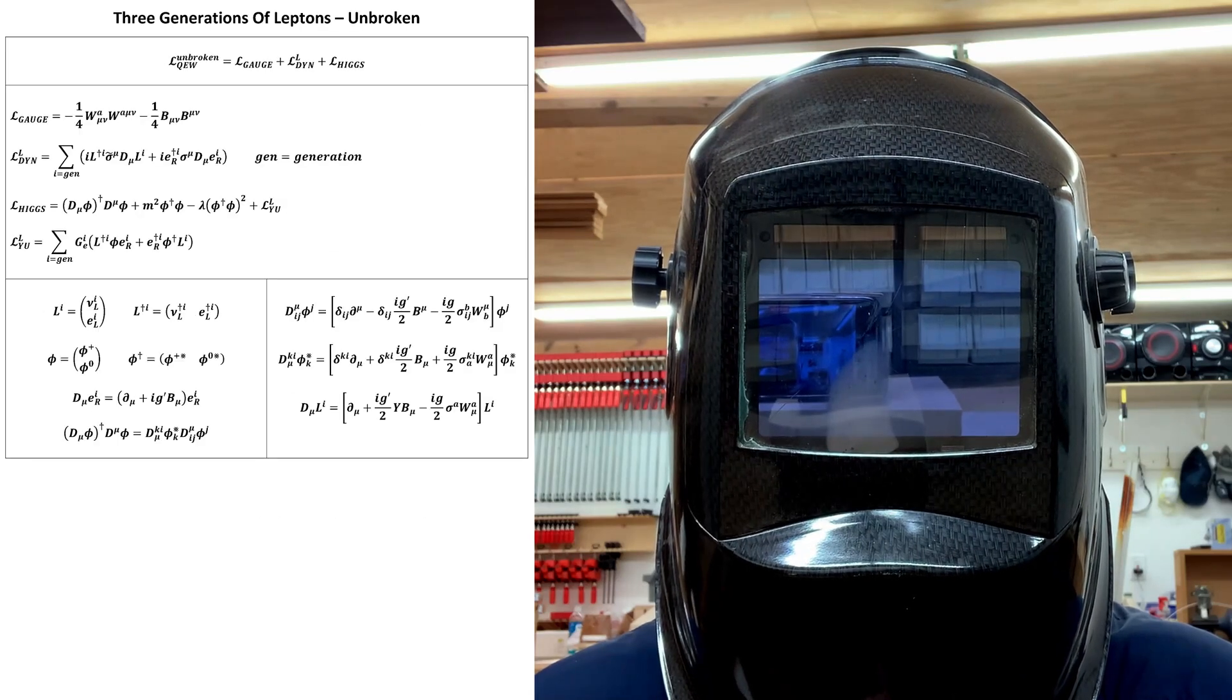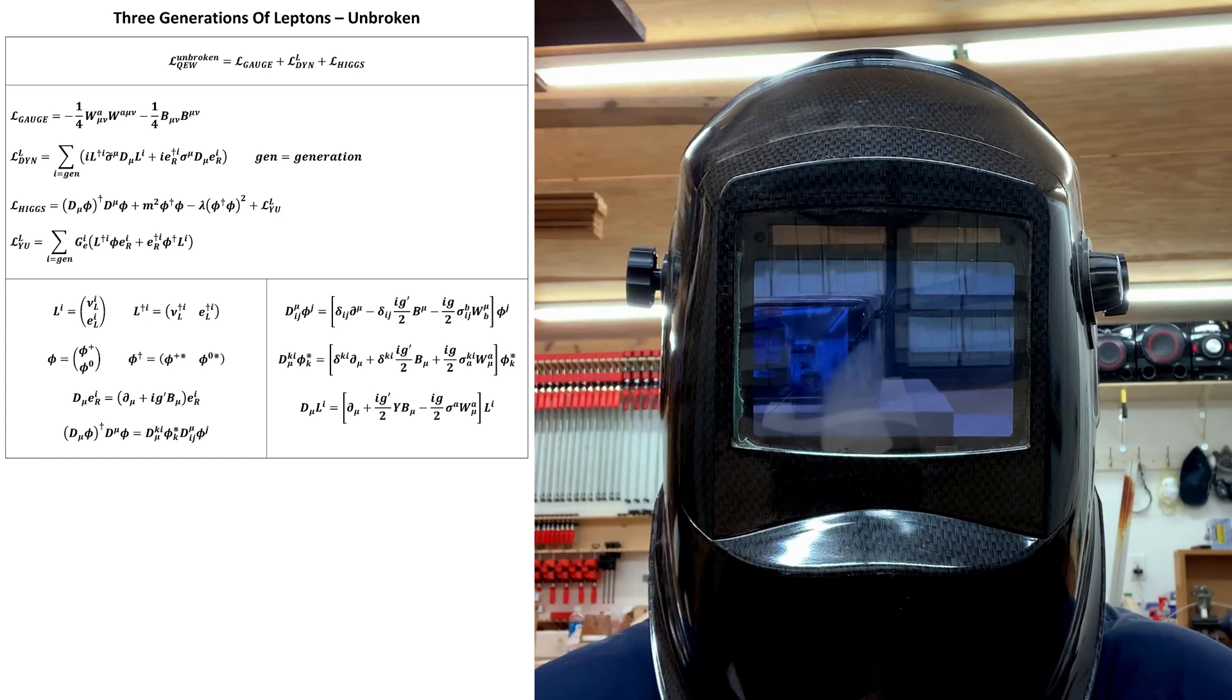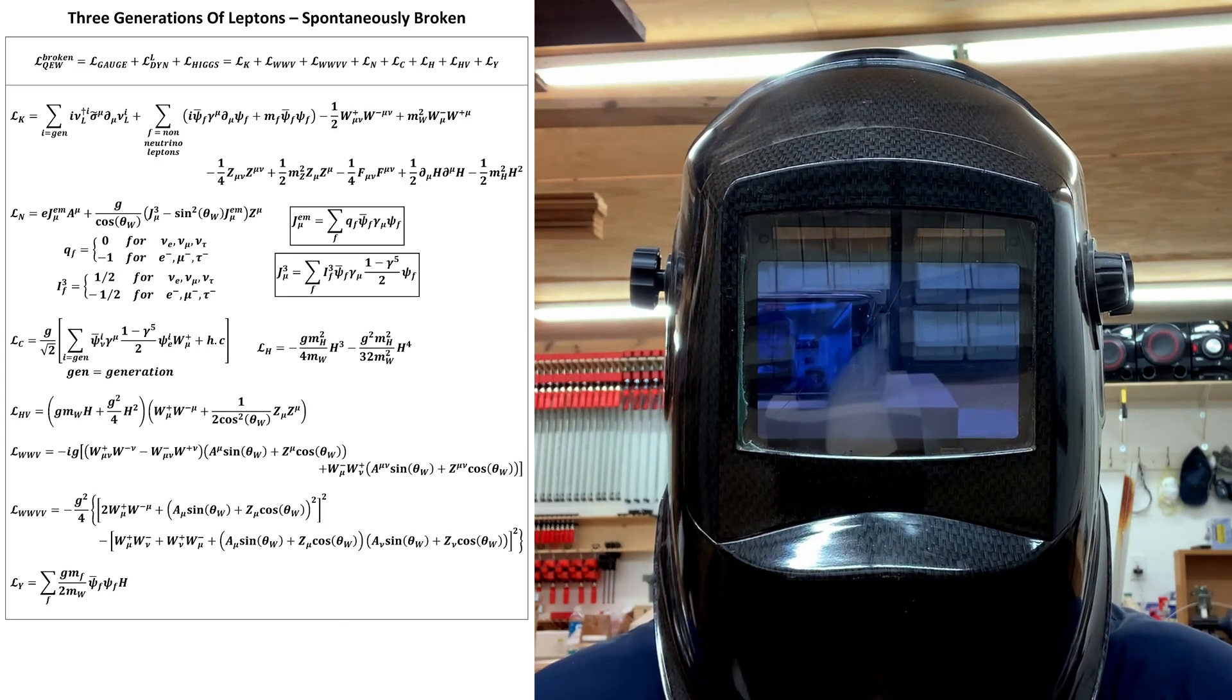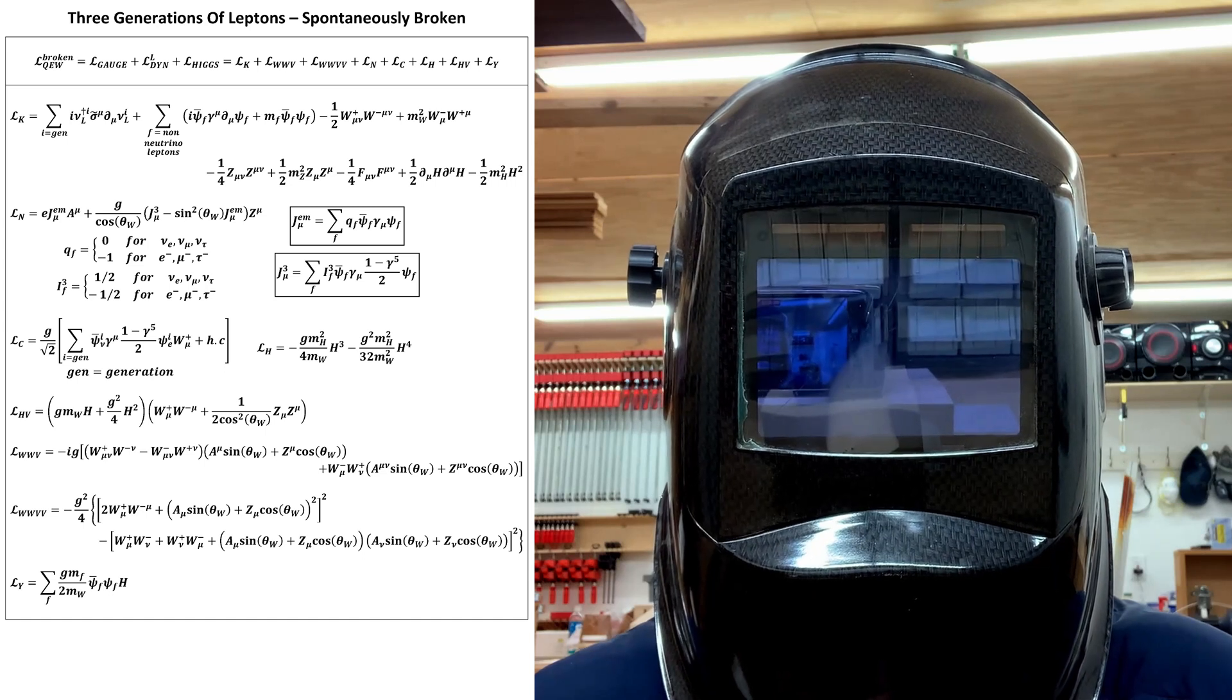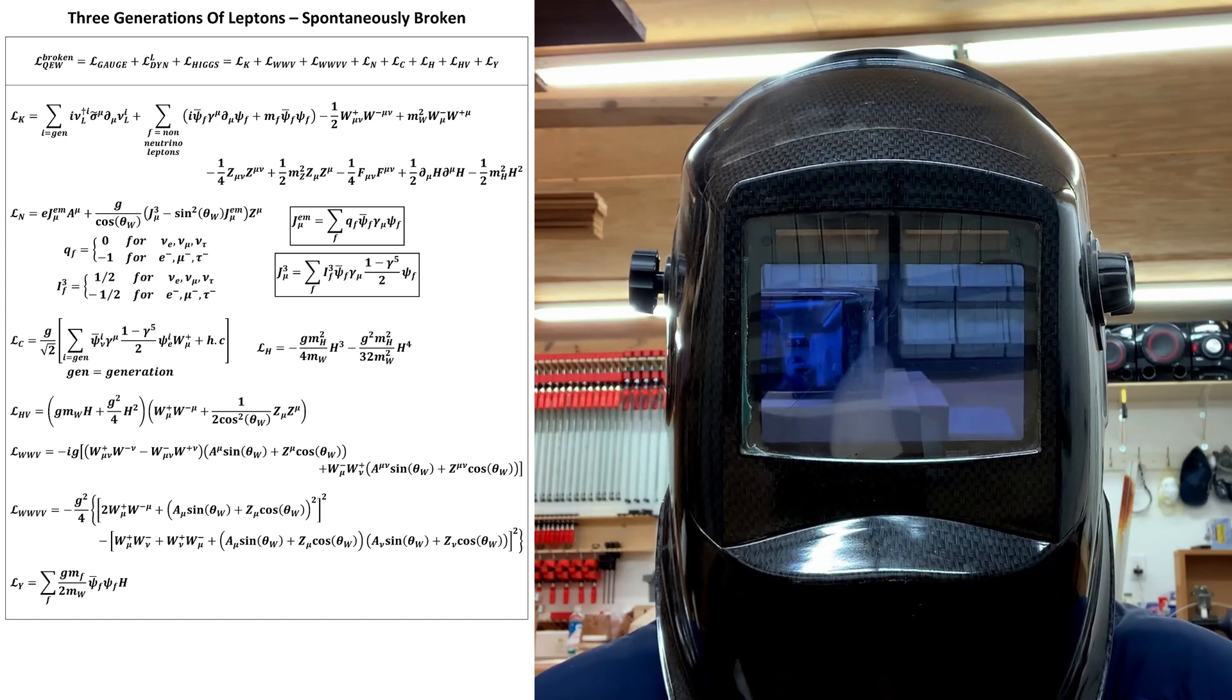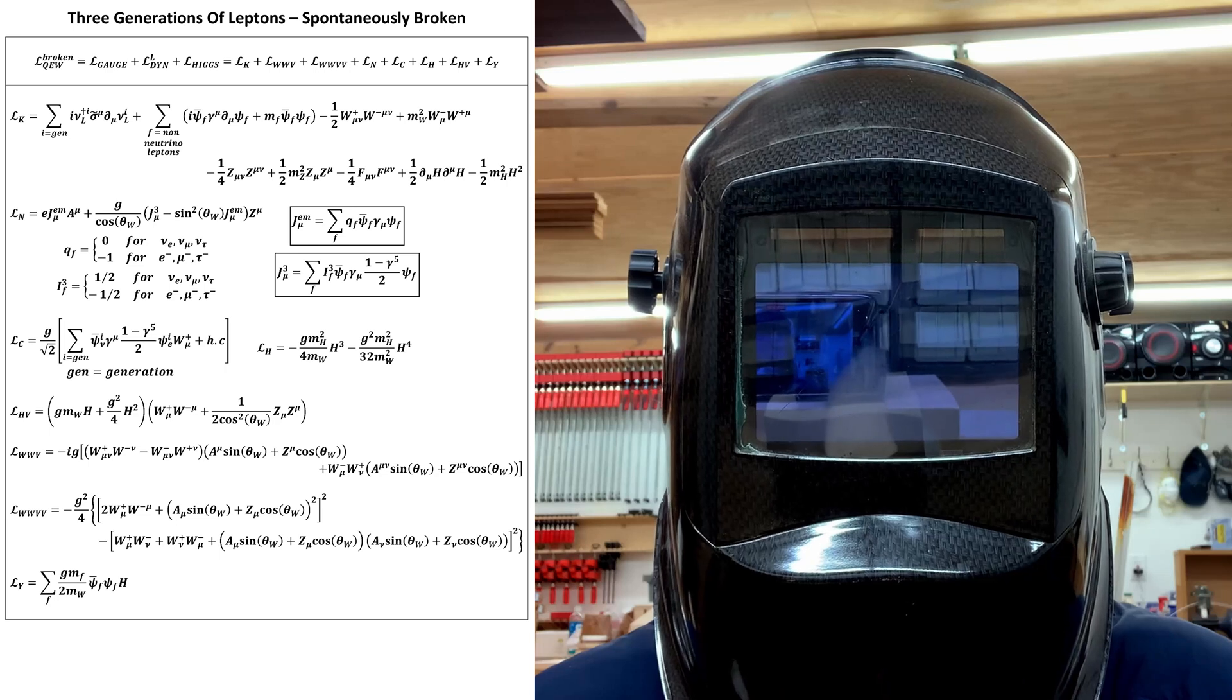This trivially gives us this unbroken Lagrangian and this spontaneously broken Lagrangian. Next, we need to add the quarks.